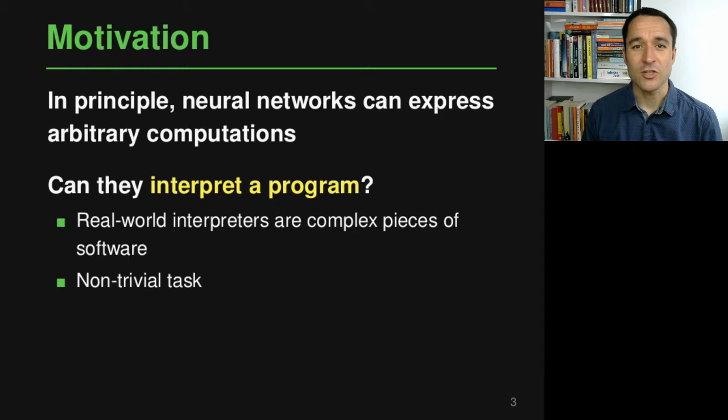The overall idea of this application is to see if we can interpret a program. Interpreting a program basically means take the source code and execute it or reason about what would happen during execution and tell us the output of the computation. In principle, we know that neural networks are able to express arbitrary computations. So in principle, a neural network should be able to interpret a program given in source code. The question of this approach is, can you really interpret a program using a neural network?